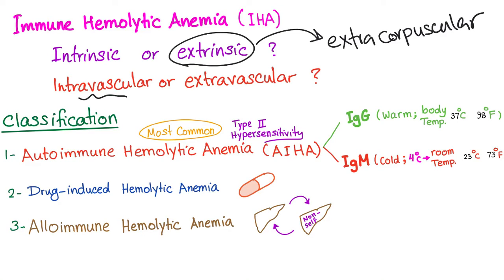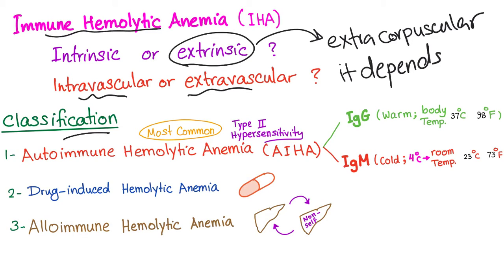Whether it is intravascular or extravascular hemolysis depends on the subtype. We classify immune hemolytic anemia into three different subtypes. Number one: autoimmune hemolytic anemia, which is by far the most common subtype and is a type 2 hypersensitivity reaction.